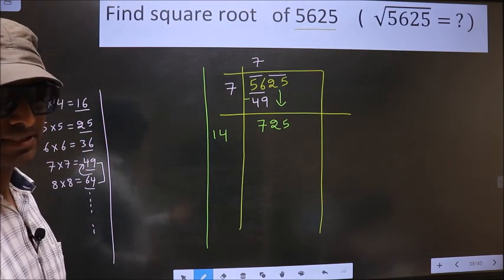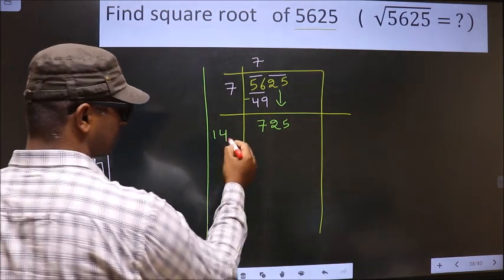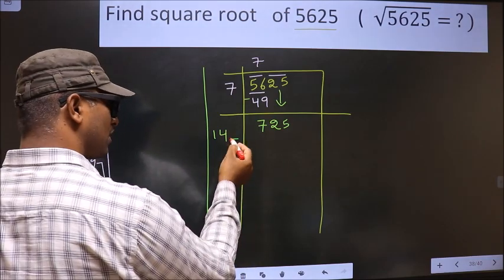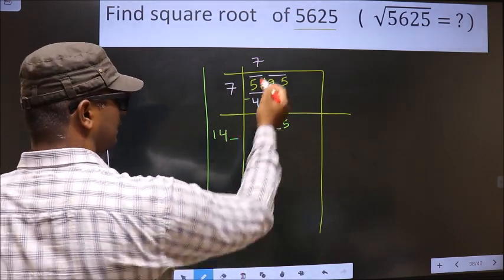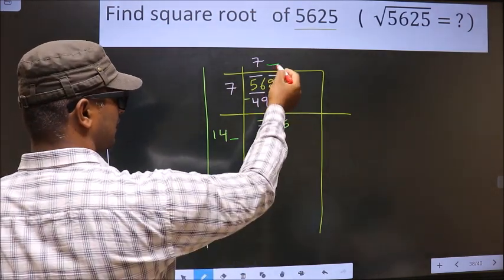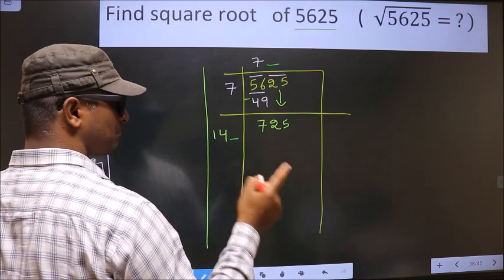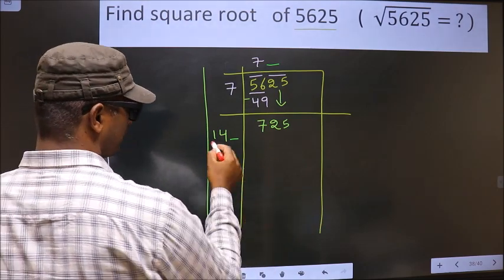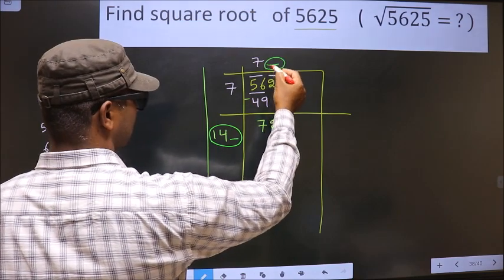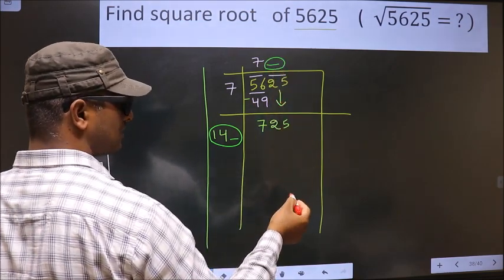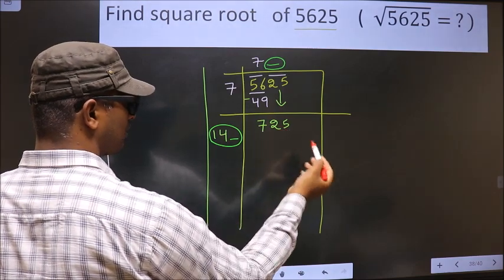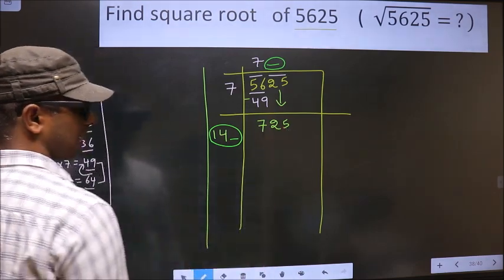Okay, next. Now here we should write a number. Condition is whatever number we write here, here also we should write the same number. And also, when we multiply this number and this number, the resulting number should be equal to this or smaller than this, but not larger than this number.